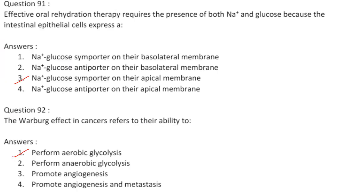Effective oral rehydration therapy requires the presence of both Na+ and glucose because the sodium-glucose importer is found on the apical membrane of intestinal epithelial cells. Sodium and glucose bind to the importer and are simultaneously co-transported into the epithelial cells. That is why for effective rehydration therapy you require both Na+ and glucose.